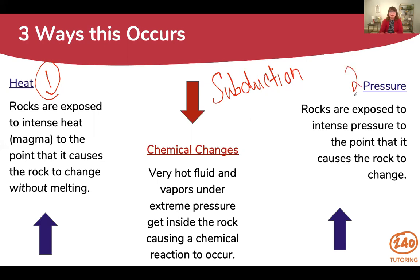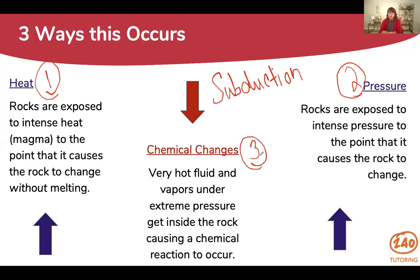Number two is pressure. This is where you have either the upper layers of sediment applying a huge amount of pressure through their sheer weight, or tectonic plates that are sliding or colliding together. All that pressure can also cause a rock to change — that would be a metamorphic rock. Third, we have chemical changes. When there is a lot of heat and extreme pressure, fluids, vapors, and chemicals can invade the pores of a rock and cause a chemical reaction, thus changing the chemical makeup of the rock. This is sufficient for what you need to know for your exam.